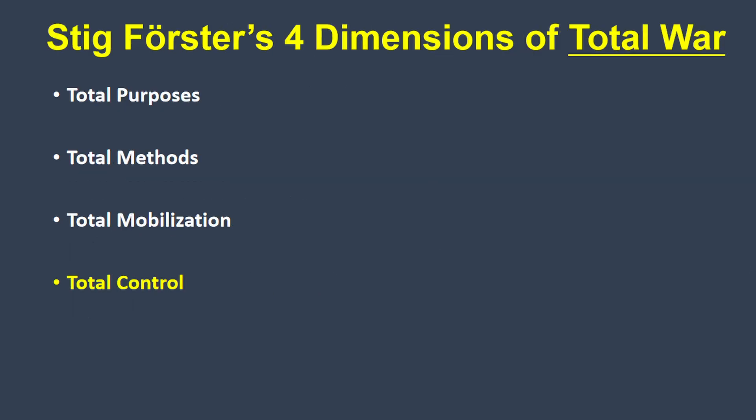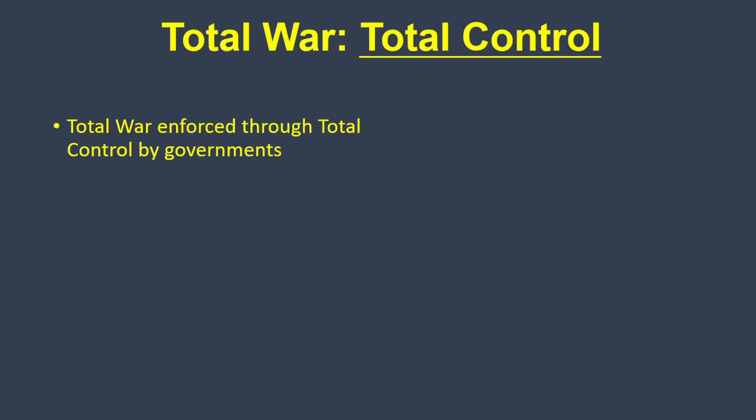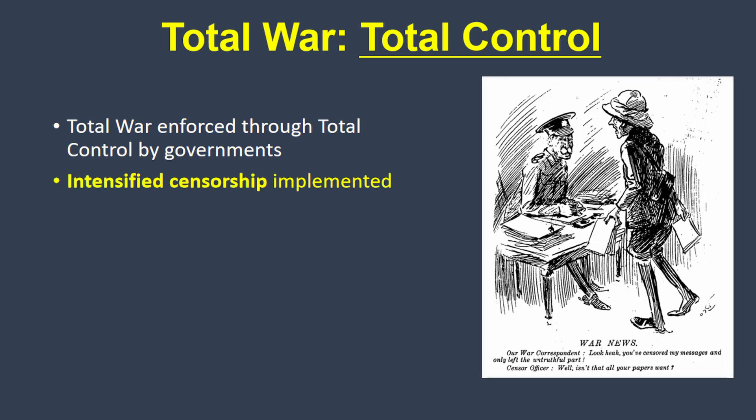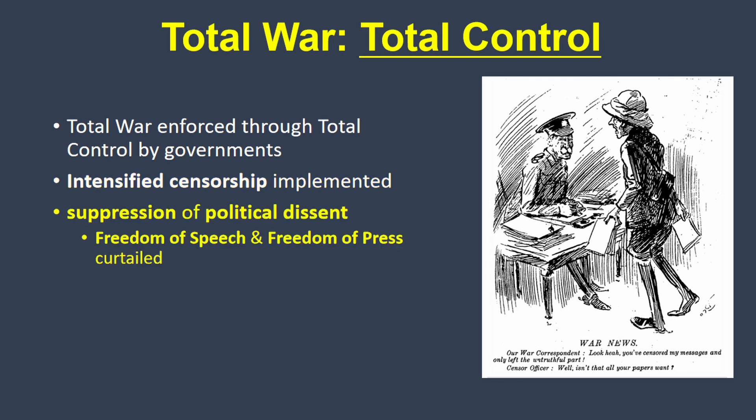The fourth category is total control. In order to enforce all the other aspects of total war, governments needed to exert ever-stronger control over their populations, including intensified censorship and the crushing of political dissent. Enlightenment liberal values, like freedom of speech and freedom of the press, were suppressed in the interest of the nation's war efforts.